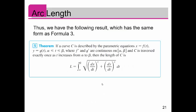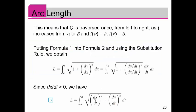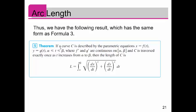Thus we have the following result, which is the same form as formula 3. If a curve C is described by the parametric equations x is a function of t, y is also a function of t, t is evaluated from alpha to beta, the derivatives f prime and g prime are continuous on alpha to beta, and C is traversed exactly once as t increases from alpha to beta, then the length of C is given: length is the integral from alpha to beta of the square root of dx/dt squared plus dy/dt squared dt, and your variable of integration here is dt.